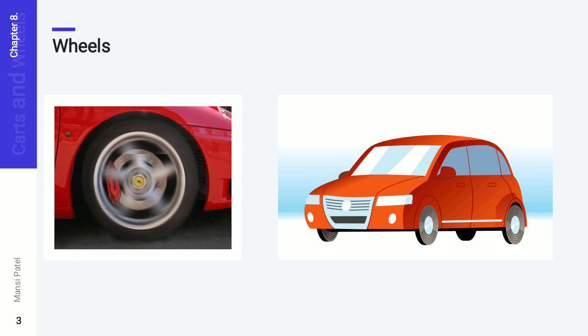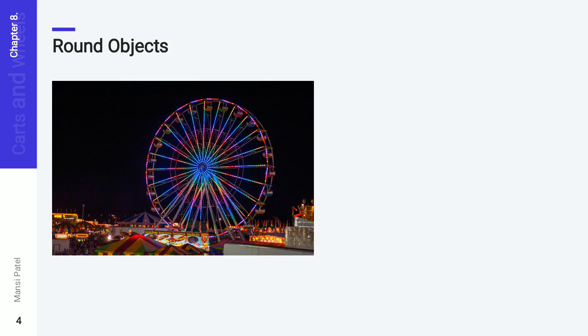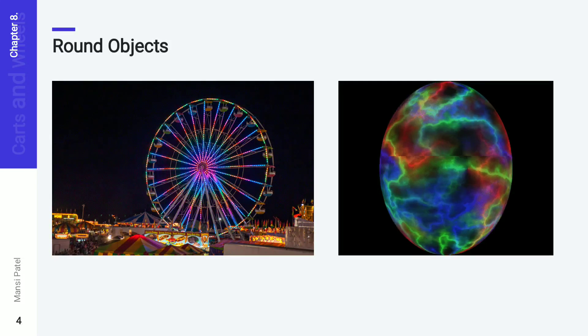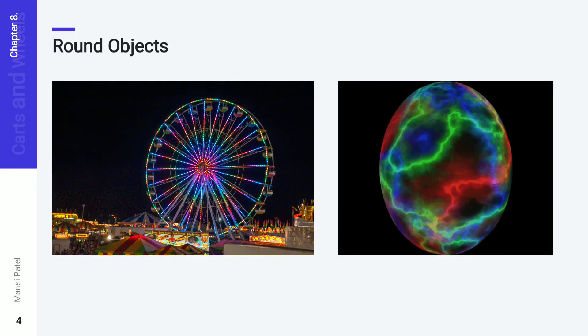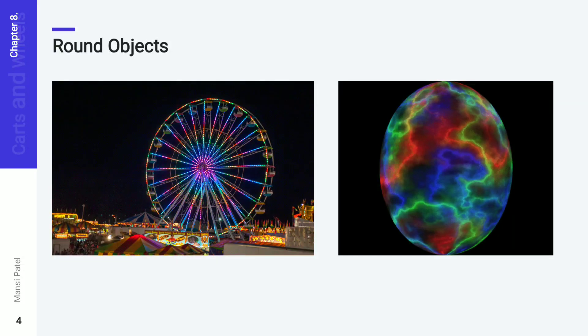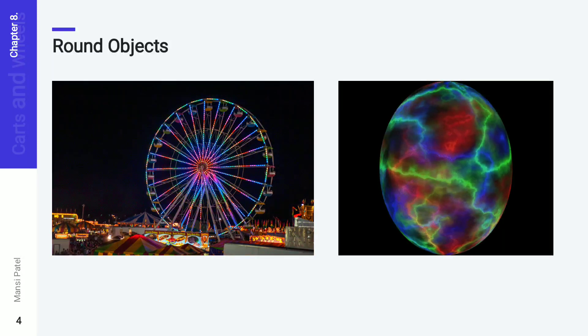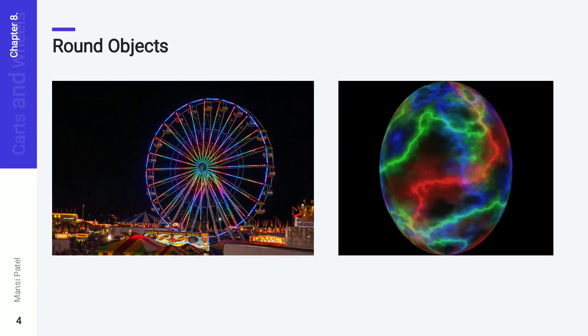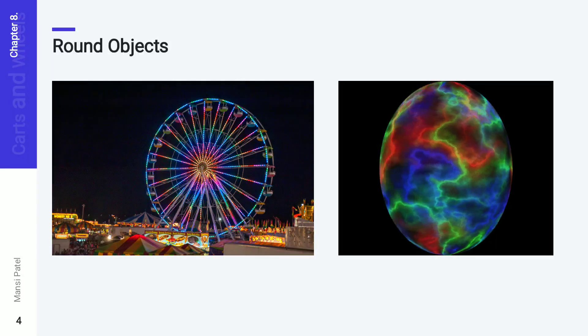Do you know why the name of this chapter is 'Carts and Wheels'? In this chapter we have to study all about circles and round objects. 'Round' means it is a circle. See here — at a fair you can see many rides and the shape of those rides is a circle. The shape of our Earth is also a circle, so we can say the Earth is a round object. There are lots of round objects around you.